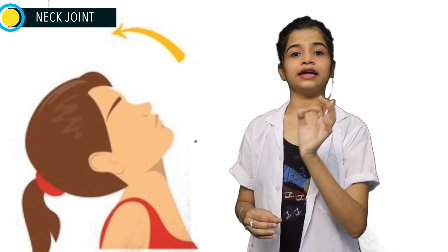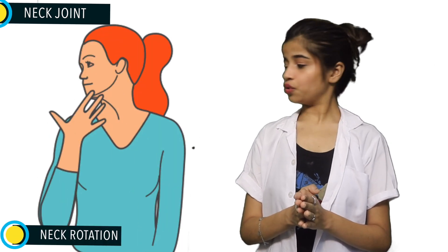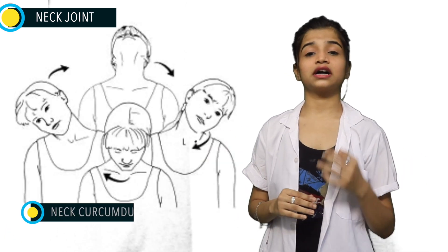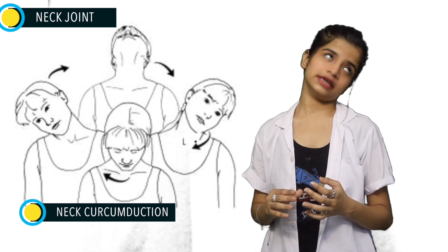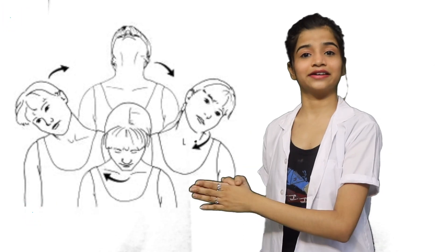Moving your head backward to 45 degrees like this is called extension. Rotating our head with the chin from left side to right side is called rotation. The combination of all these movements allows us to do circumduction — moving our head in 360 degrees like this.